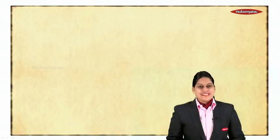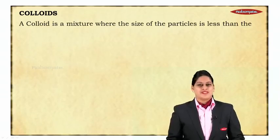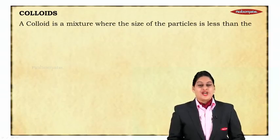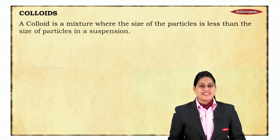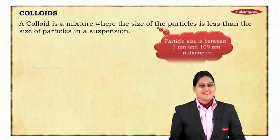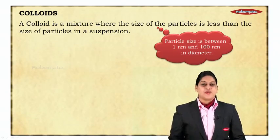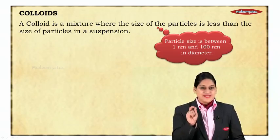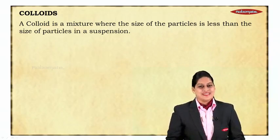The second type of heterogeneous mixture is colloid. Colloid is a mixture where the size of the particle is less than that of the particle in case of suspension. The particle size here is between 1 nanometer and 100 nanometers in diameter.